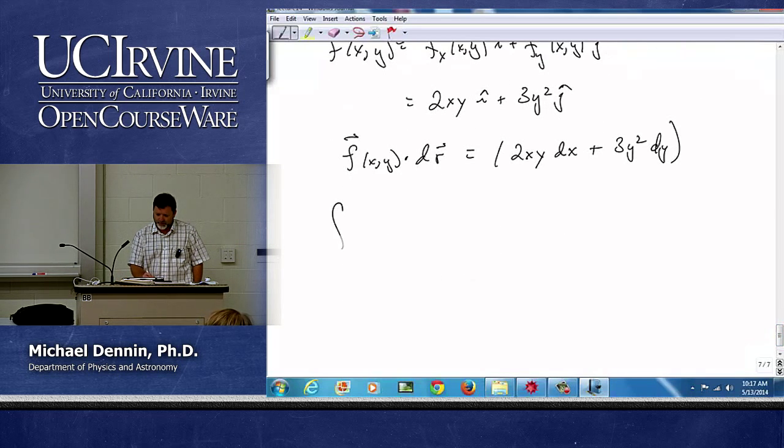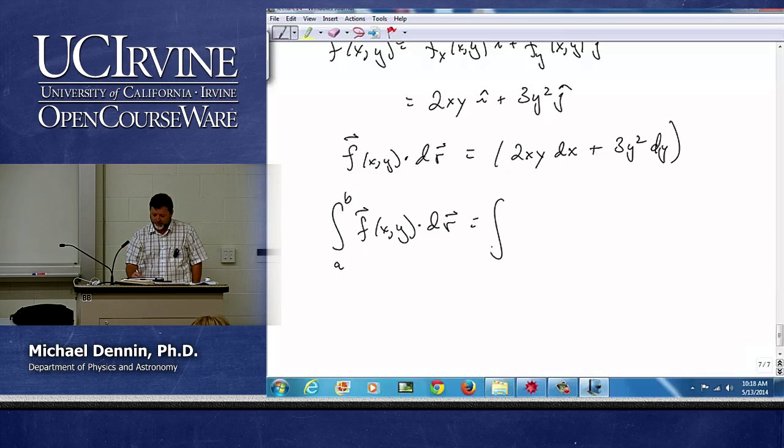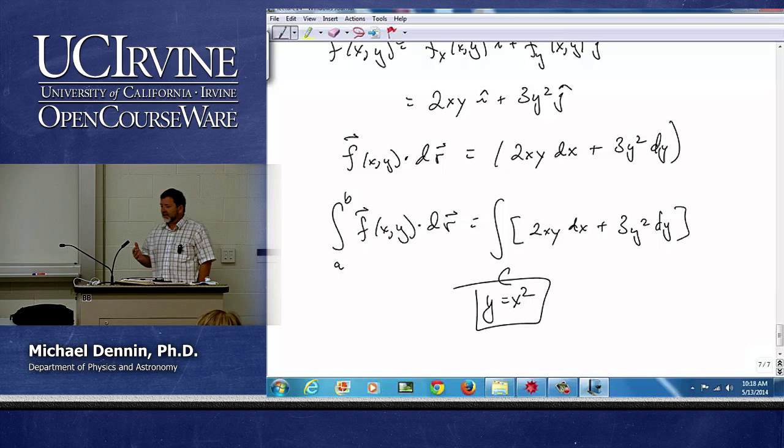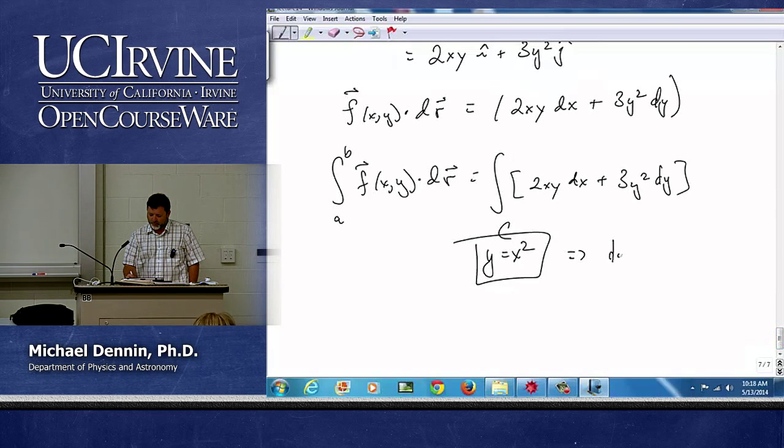Because what we're going to now do is the integral from point A to point B is some integral that we have to figure out what the limits are of that. Now, we want it along the curve given by y equals x squared. So, again, that's one parametrization we can use, and if we use that, we know that dy equals 2x dx.